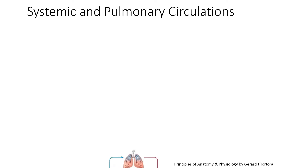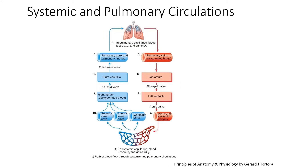Now let's see the systemic and the pulmonary circulation. The right atrium consists of deoxygenated blood. This deoxygenated blood comes from the superior vena cava, inferior vena cava, and the coronary sinus. These three pour the deoxygenated blood into the right atrium.